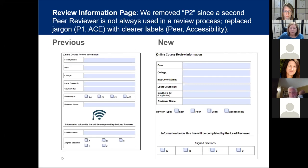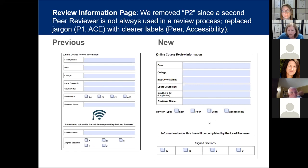Here is the information page and how that's changed — it's more streamlined now. We removed P2 since a second peer reviewer is not always used in the review process, and we replaced jargon with clearer labels: peer accessibility, self review, or a lead review. We just have a space for the lead reviewer name, and the aligned selections here look a lot better.